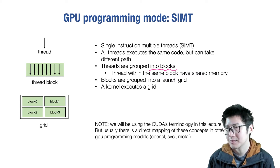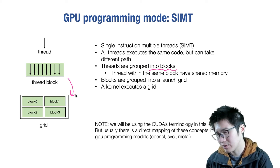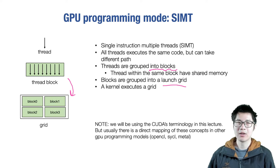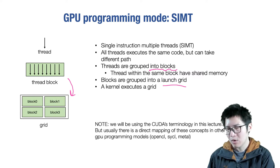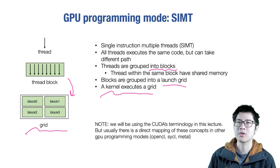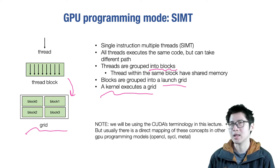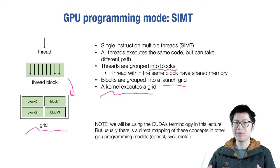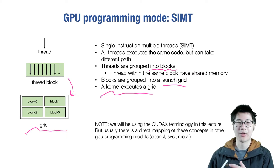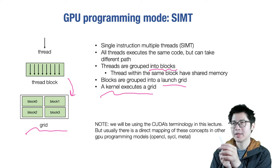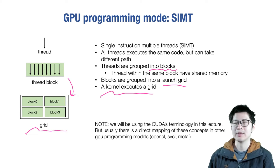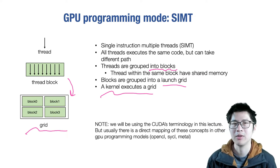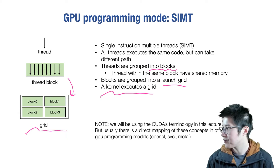Finally, all the thread blocks are grouped into what we call a launching grid that contains multiple blocks. When we say we want to launch a GPU kernel, what we really mean is we're launching this entire grid of thread blocks containing multiple threads. The GPU kernel model contains two levels of hierarchy: thread blocks as the first level, and the launching grid as the second level. This two-level hierarchy will come back when we discuss more advanced programming models such as shared memory programming.